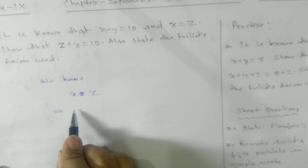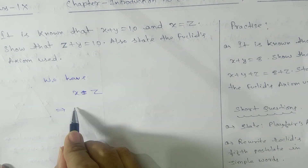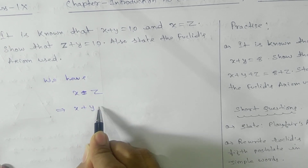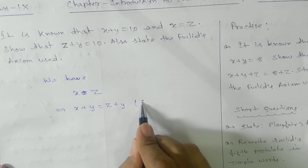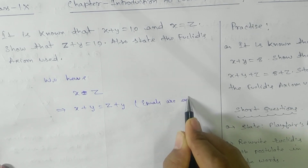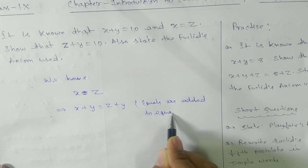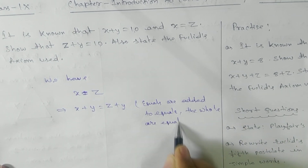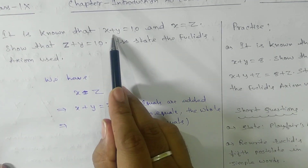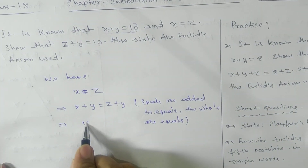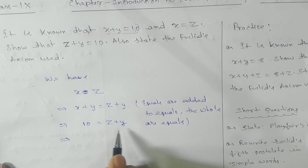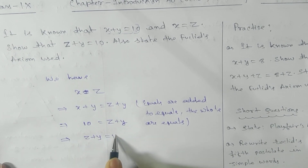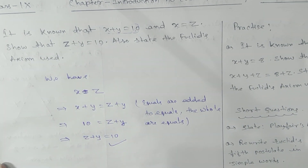Since x equals z, we can substitute z in place of x. Using the axiom that things equal to the same thing are equal to one another, it is given that x plus y equals 10. Replacing x with z, we get z plus y equals 10. This completes the proof — here is a practice problem, solve it.